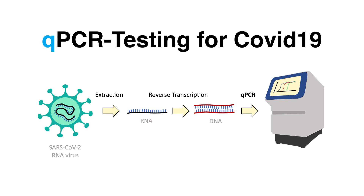For that, a swab is taken which may contain viral material. The RNA is extracted and reverse transcribed into DNA. The DNA can then be analyzed with QPCR in a light cycler.